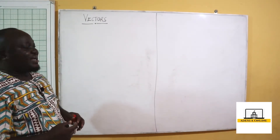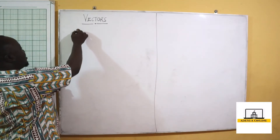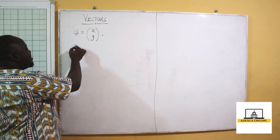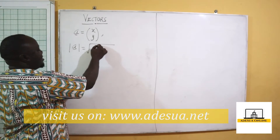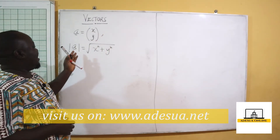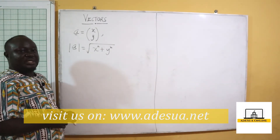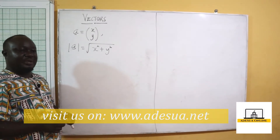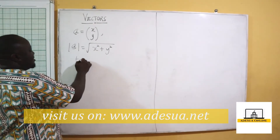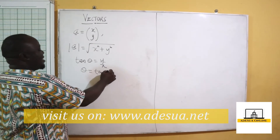When we talk about a vector, a vector is a quantity that has magnitude and direction. If I have a vector a equal to (x, y), we are saying that this vector a has a magnitude. The magnitude can be found by the square root of x squared plus y squared. If we want to find the direction, we have to first find the angle, and we can find the bearing before we calculate from the north. So if tan θ equals y over x, then our angle θ is equal to tan inverse of y over x.